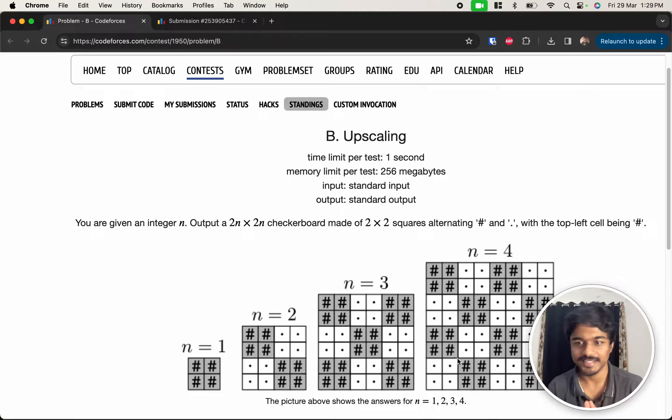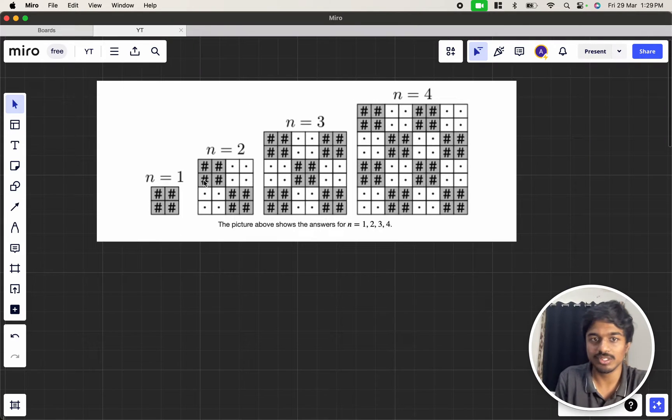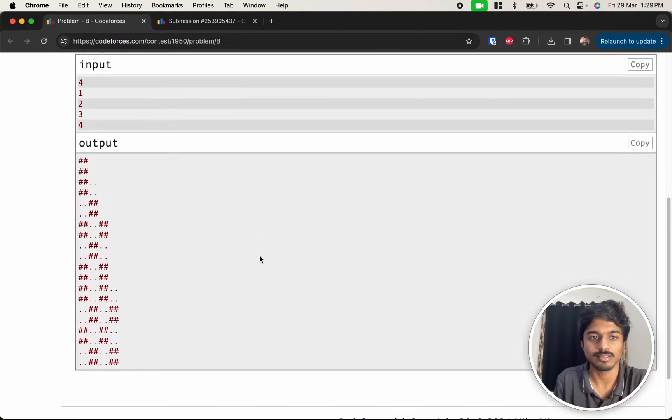really interesting by some of the top coders. Let's discuss the problem. We will be given an integer and we have to output a 2n by 2n checkerboard made of 2 by 2 squares alternating hash and dot. This is what we have to output.